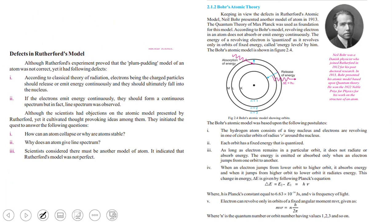Today you have studied defects in Rutherford's Atomic Model. The first defect was that the electron continuously moves so its energy will end and the atom will collapse. The second defect is that electrons should release a continuous spectrum but a line spectrum was observed. After that, Bohr's atomic theory — based on Max Planck's quantum theory — presented postulates: specific orbits for hydrogen, fixed energy levels, energy only released or absorbed when jumping orbits, and the angular momentum formula. That is all for today. Thank you and Allah Hafiz.